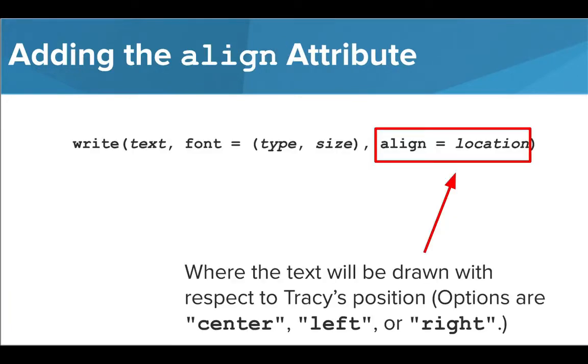The third attribute we can use when we use our write function is align. This will determine where the text will be drawn in relation to Tracy's position. The options we can use here are center, left, or right, all written inside quotation marks.